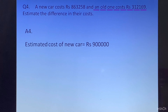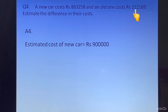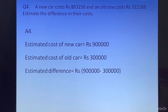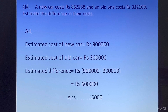The old car costs rupees 312169. The digit at the 10,000 place is 1, which is less than 5, so the digit at the lakhs place will remain 3 and all the digits on the right will become 0. The estimated cost of the old car is equal to rupees 3 lakhs. The estimated difference is equal to rupees 9 lakhs minus 3 lakhs, which is equal to 6 lakhs. The answer is rupees 600000.